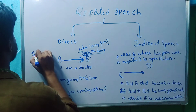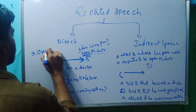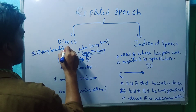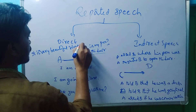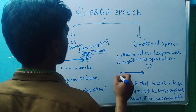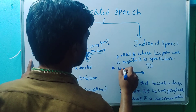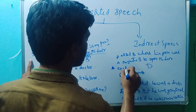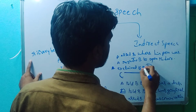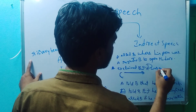C to D said: 'It is a very beautiful flower.' This is an exclamatory sentence. A to B — A exclaimed that it was a very beautiful flower.